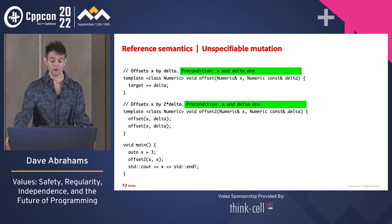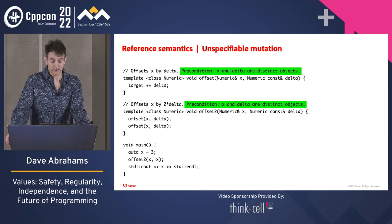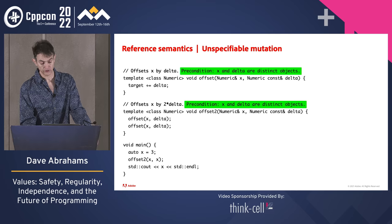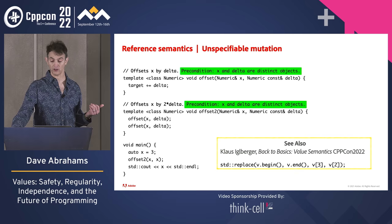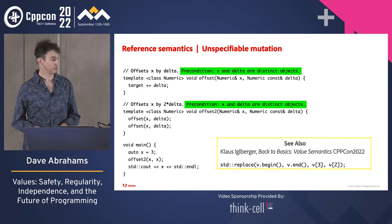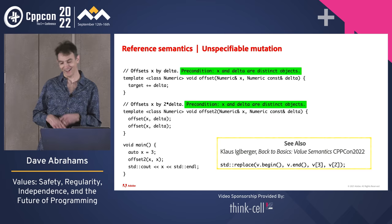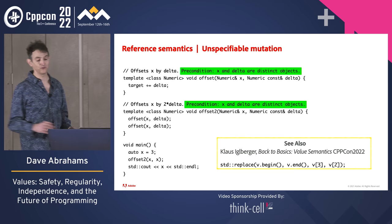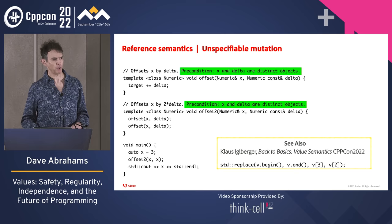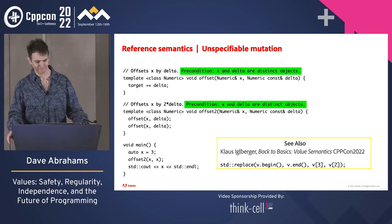The very best we can do is add a precondition that x and delta are distinct objects. This is not a unique example — Klaus showed the same problem in his Back to Basics talk, and the issue is everywhere in the standard algorithms. For example, the effects of a replace call are unspecified if inputs overlap, although the standard may not have the guts to say so directly. As one expert said: it's well specified, but if the inputs overlap, you get what you get.